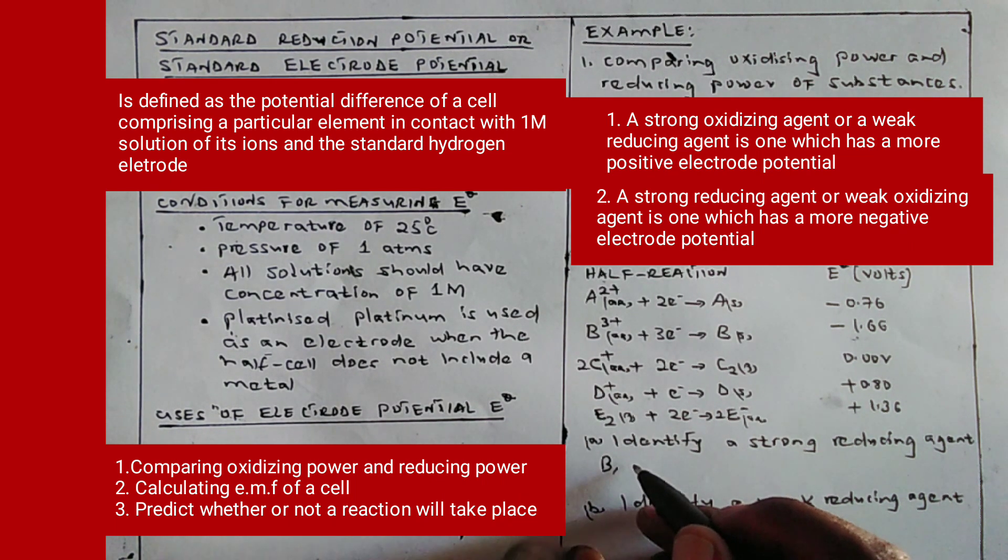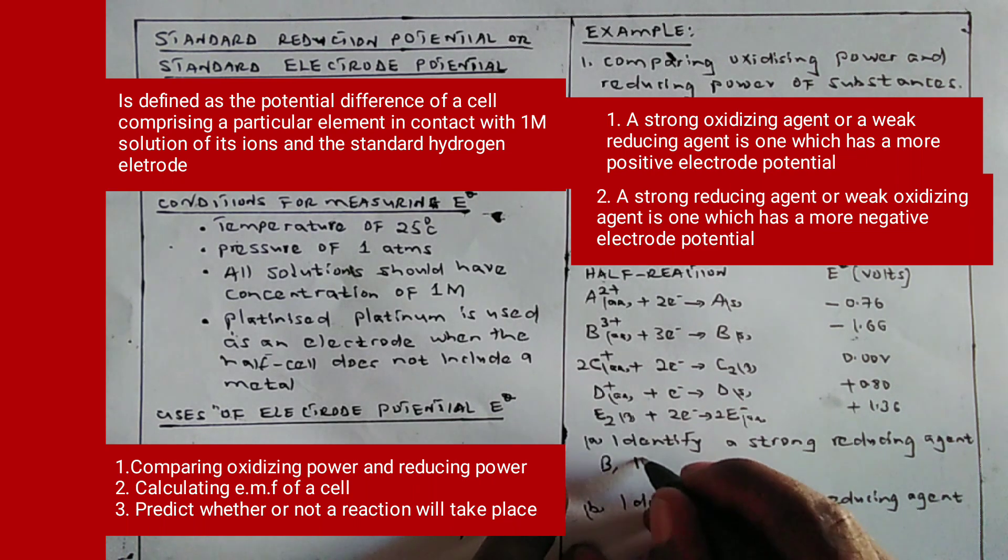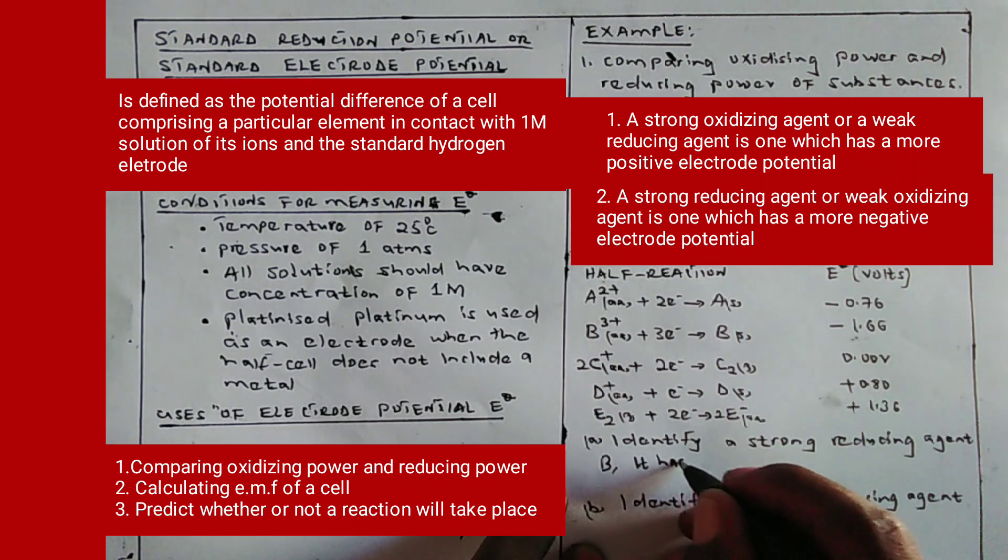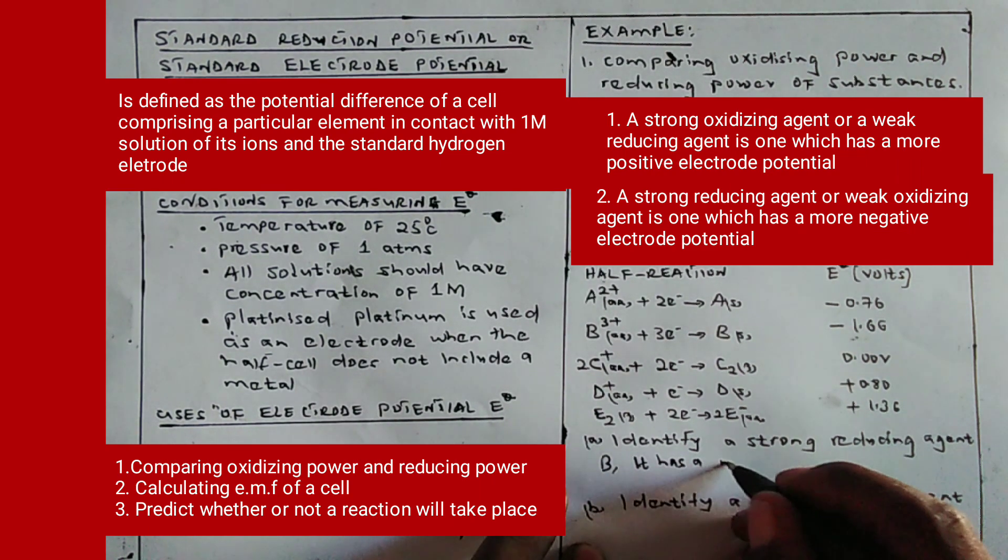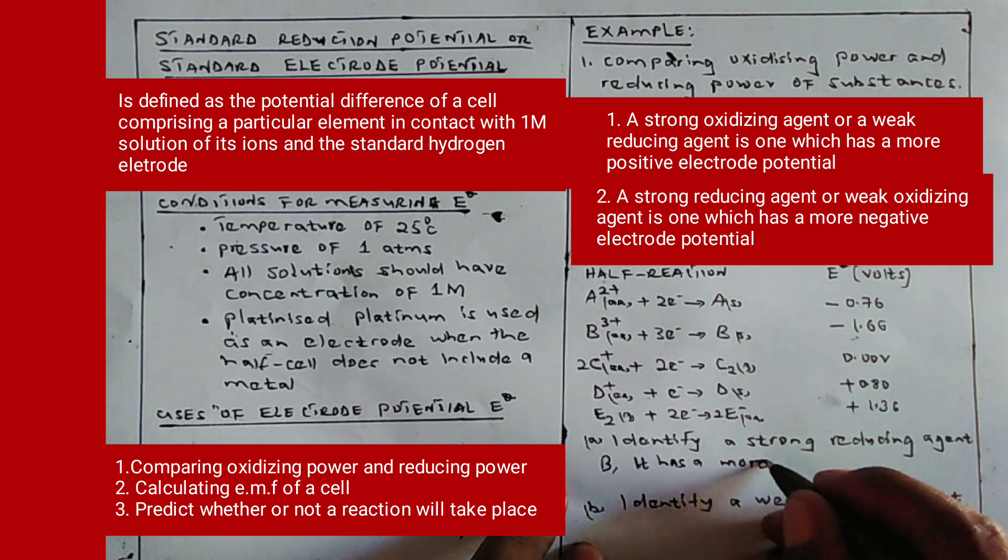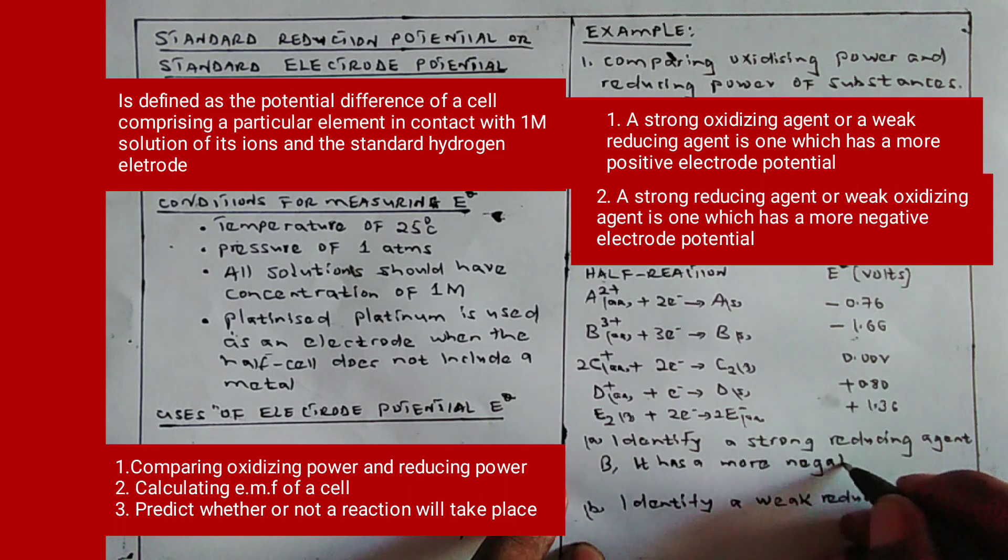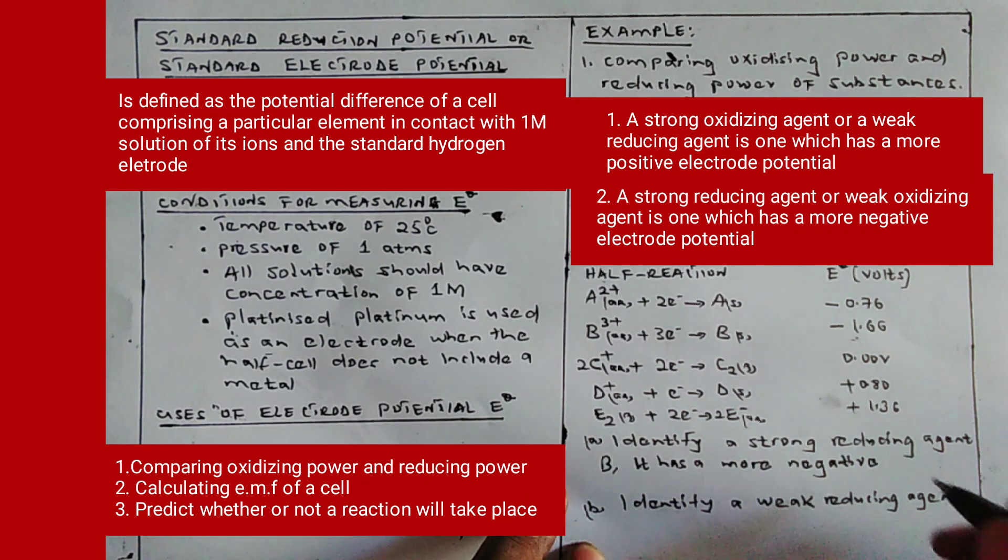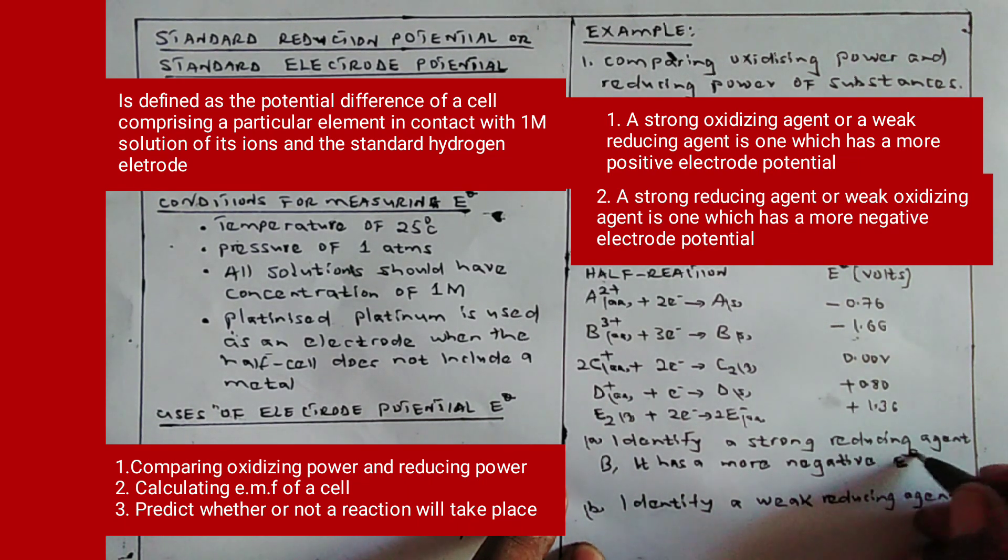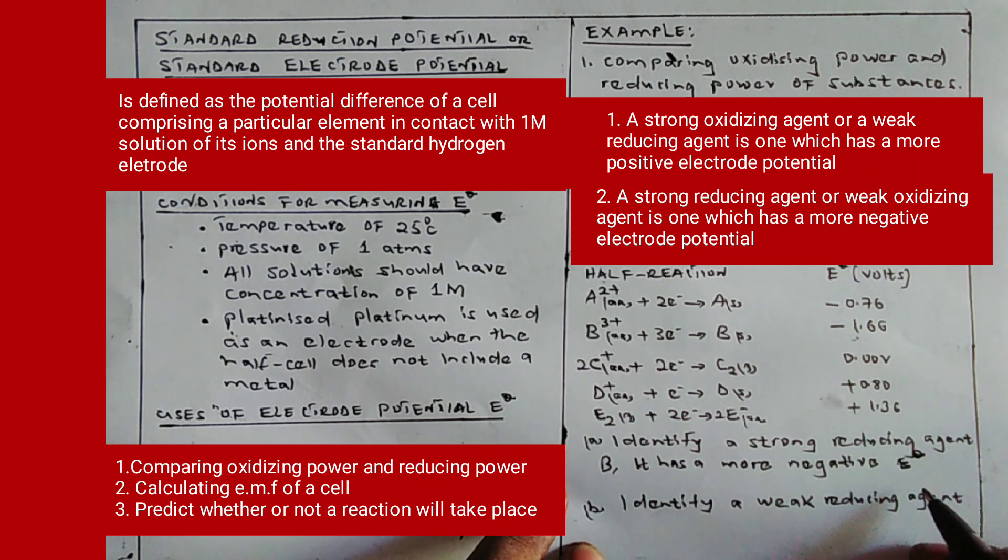The reason I'm giving: because it has a more negative electrode potential, a more negative E0 value.